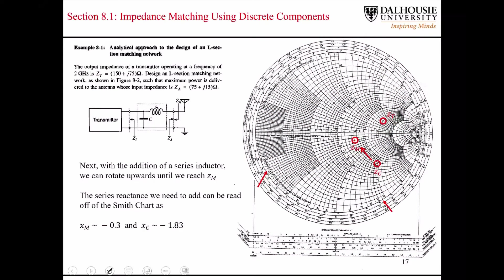Next we know that we're going to rotate on a constant resistance circle from Zc up to Zm. We're going to switch back over, remove the constant conductance circles and the susceptance curves, and just focus on the use of the impedance Smith chart. We extend the point Zc out to the outer edge of the Smith chart here, where we can read the reactance corresponding to that particular point as negative 1.83. And we know the reactance corresponding to Zm as being the complex conjugate of the antenna impedance, and that corresponds to the negative 0.3.